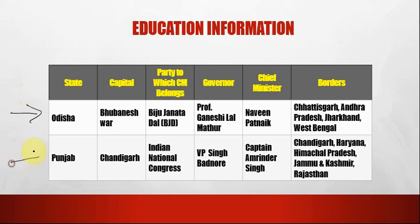The next state is Punjab. The capital of Punjab is Chandigarh. The party to which the CM belongs is Indian National Congress (INC). The governor is V.P. Singh Badnore. The chief minister is Captain Amarinder Singh. The borders are Chandigarh, Haryana, Himachal Pradesh, Jammu & Kashmir and Rajasthan.